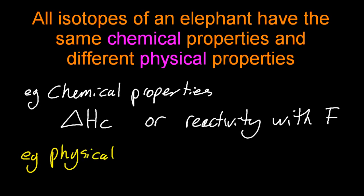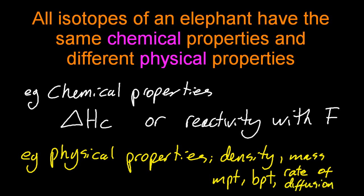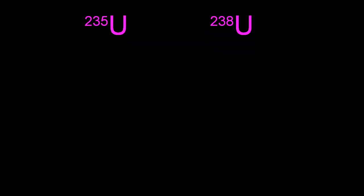But physical properties — don't forget we've added some neutrons if we're talking about isotopes. They have no charge, but they have mass. That's going to change the density, the mass, the melting point, the boiling point, and even the rate of diffusion if it's a gas — how quickly the gas moves.